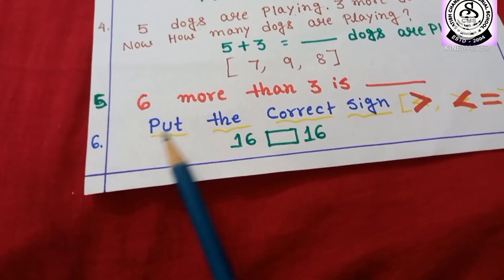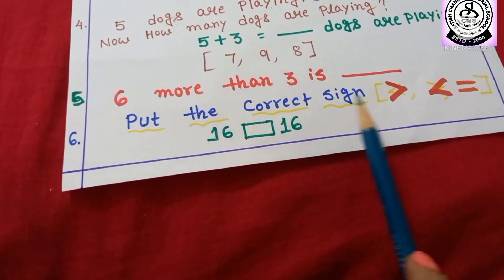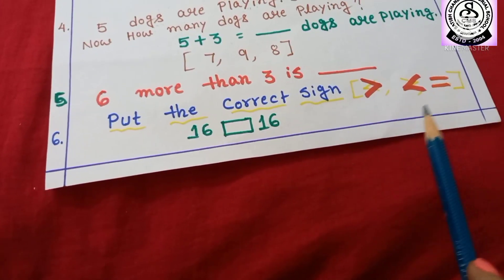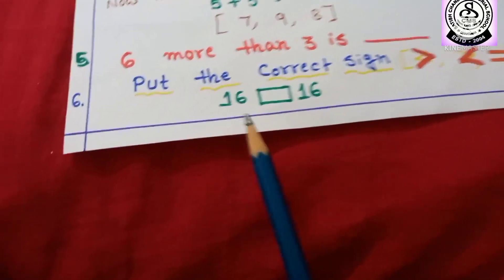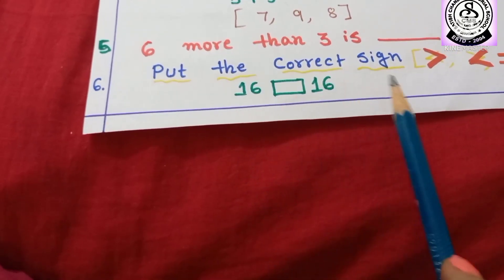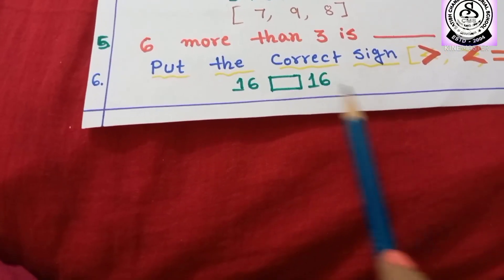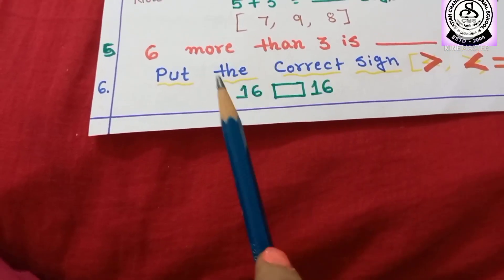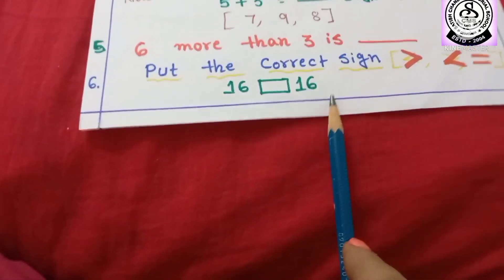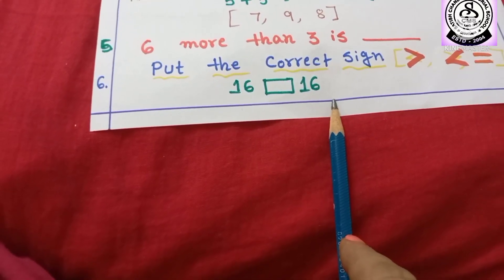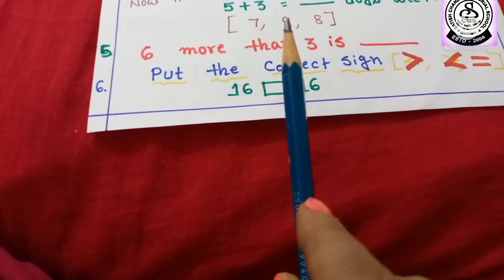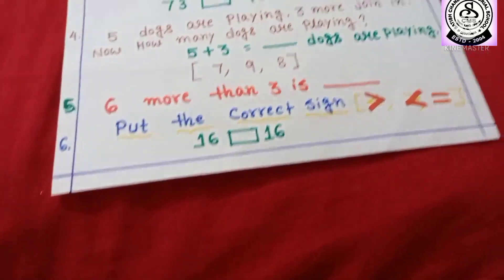Number 6: Put the correct sign. Here I have given greater than, less than, and the sign of equal to. Both sides have the same numbers — here I have given 16 and here also I have given 16. So what you have to do? Put the correct sign here. I will not help you.